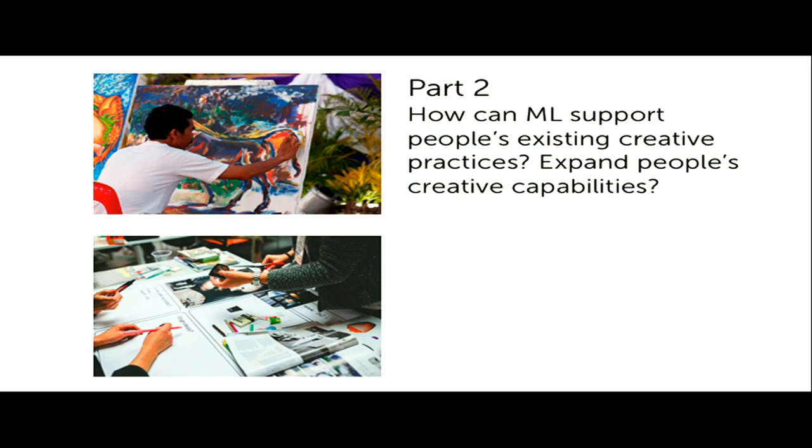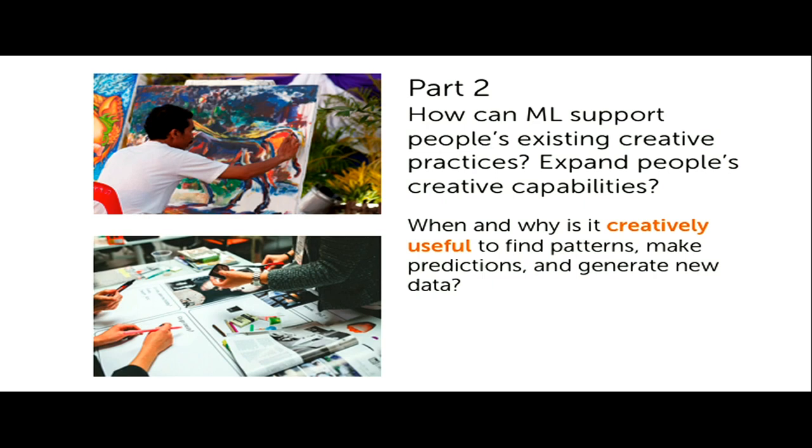So based on that definition of machine learning that I gave you earlier, we could unpack this a bit and ask, well, when and why is it creatively useful to find patterns in data, to make predictions, or to generate new data? If those are our three basic ingredients, how might those help us in our practices? And how might we build tools, for example, to actually enable people to do this? So that's another big piece of my research is actually building software, educating people, trying to enable creators to use data and machine learning effectively. Because frankly, it's not that interesting if it's just computer science PhDs who are trying to do this stuff. It's much more interesting if other people are doing this.